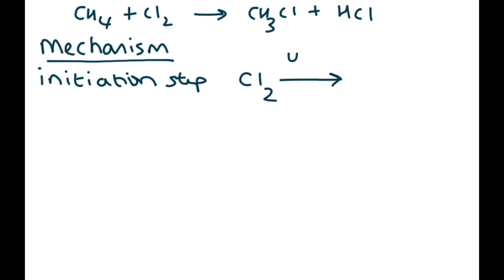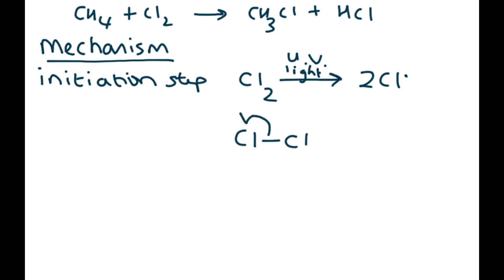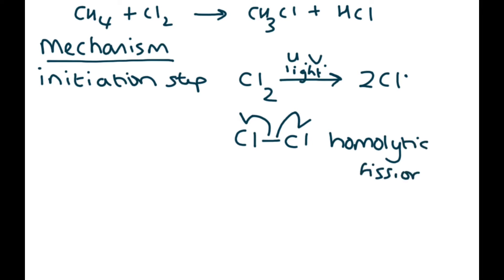In the initiation step, you have a chlorine molecule and UV light breaks that bond, forming two chlorine radicals. Each electron goes back to one atom — this is homolytic fission.